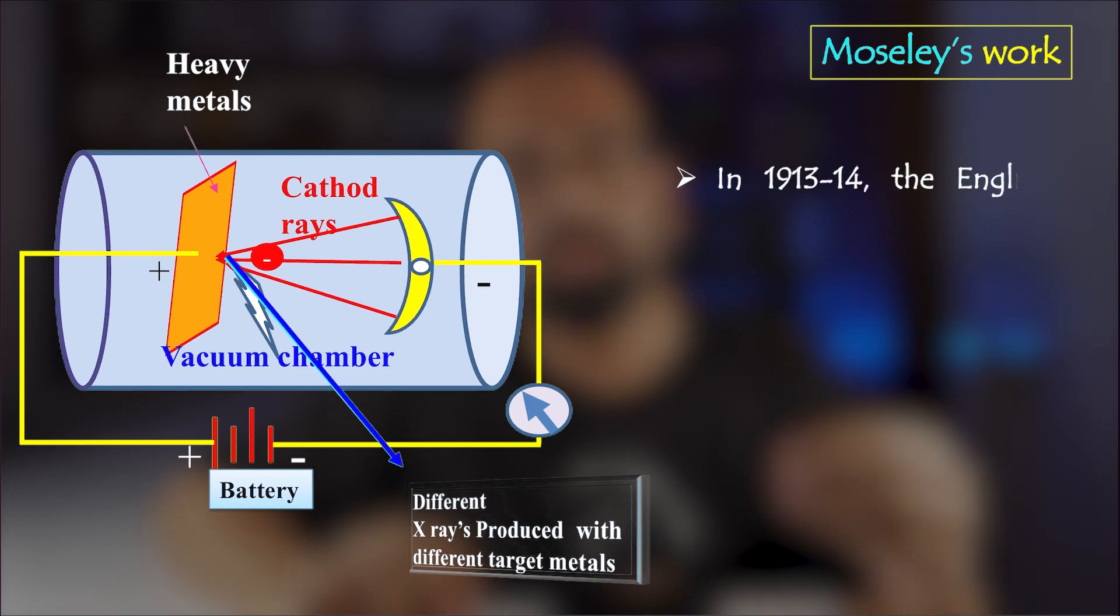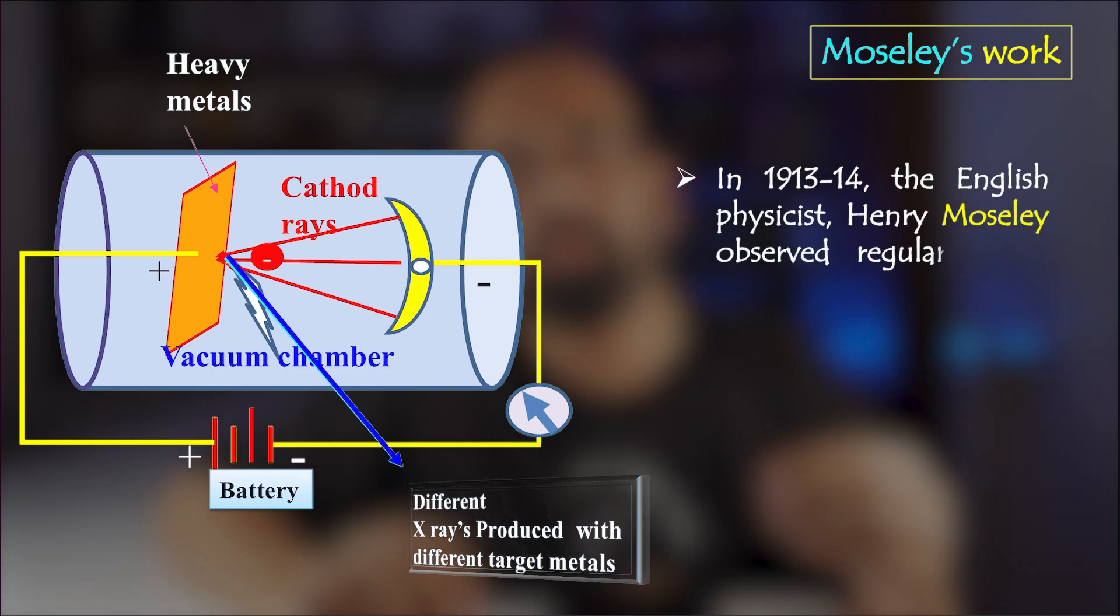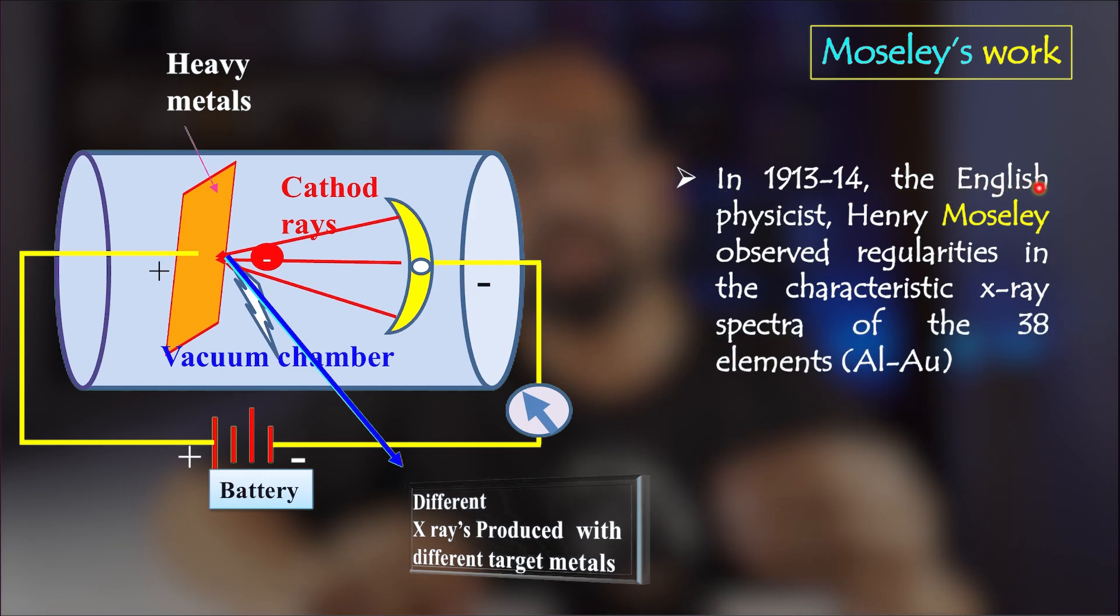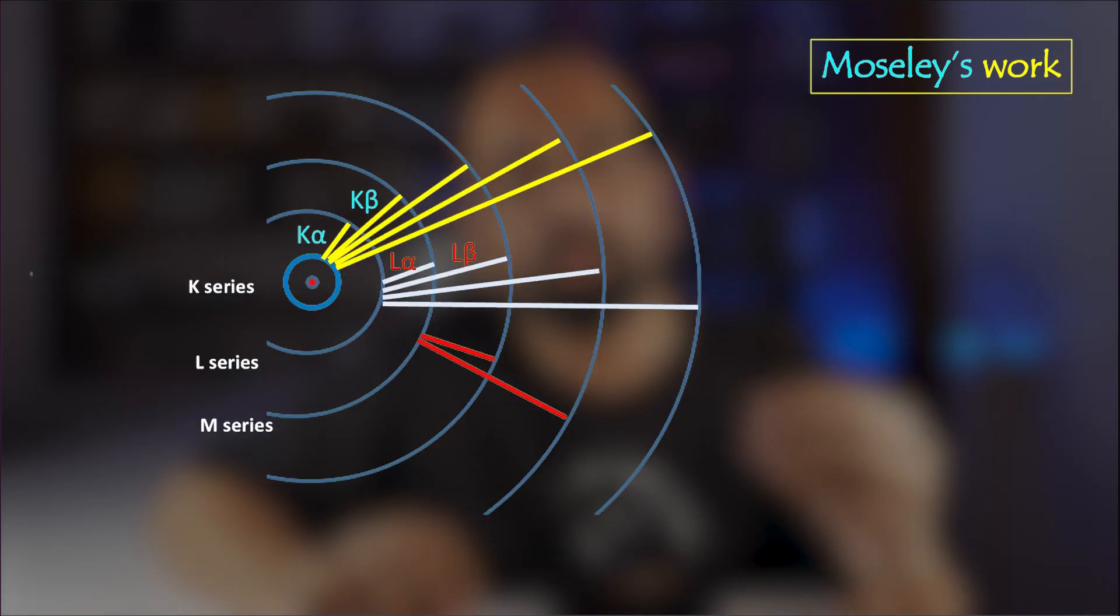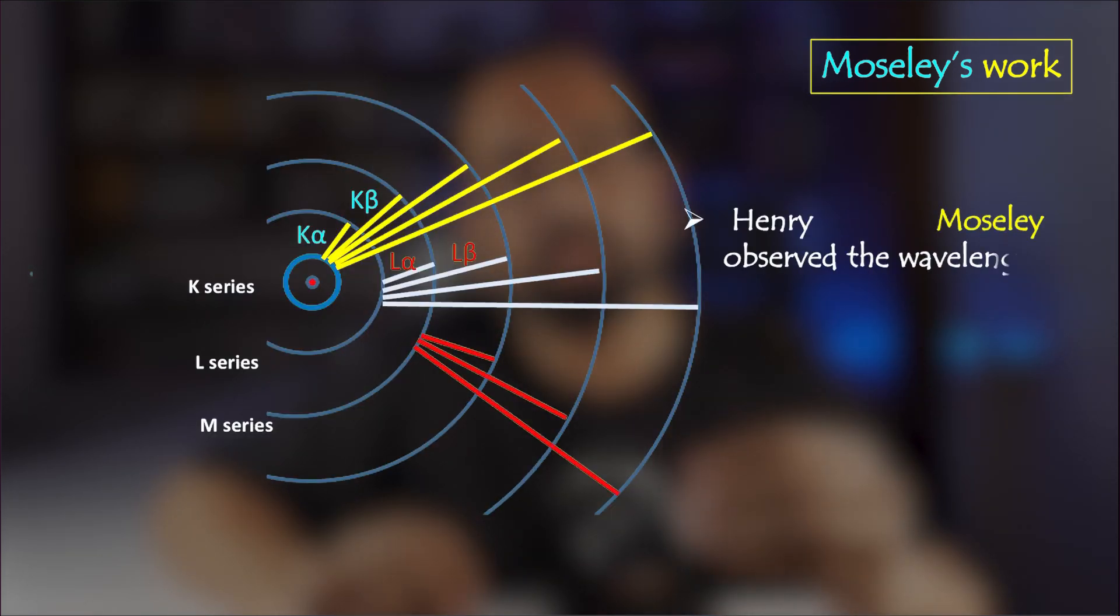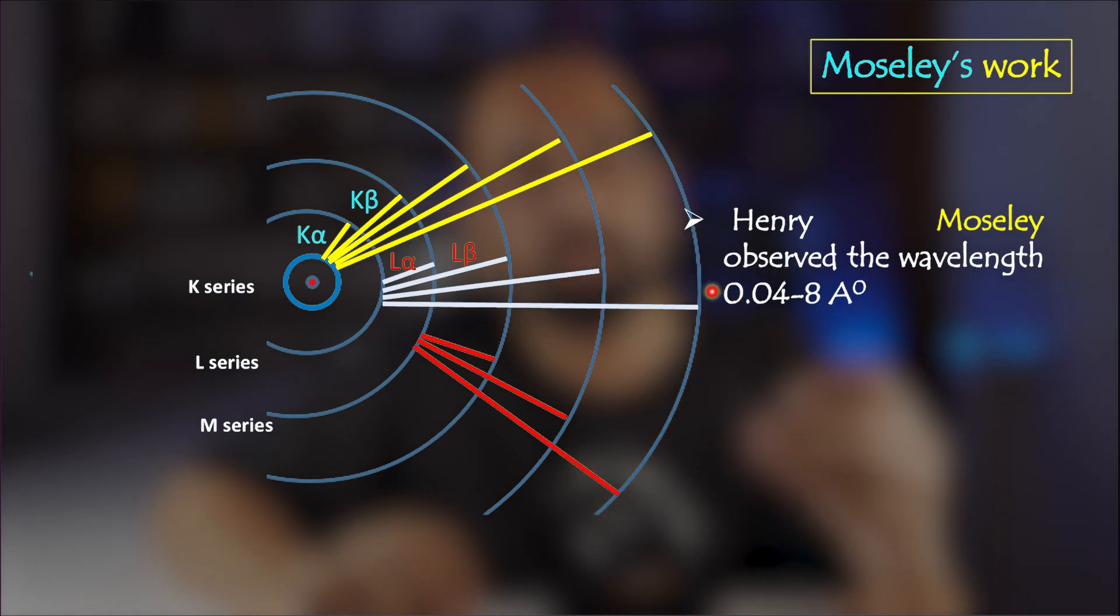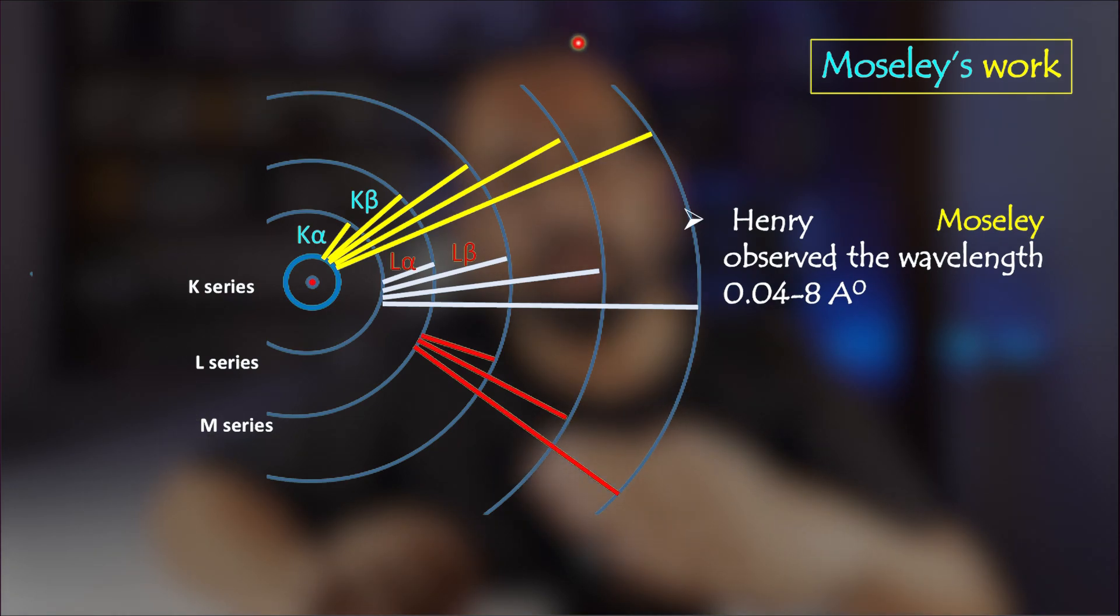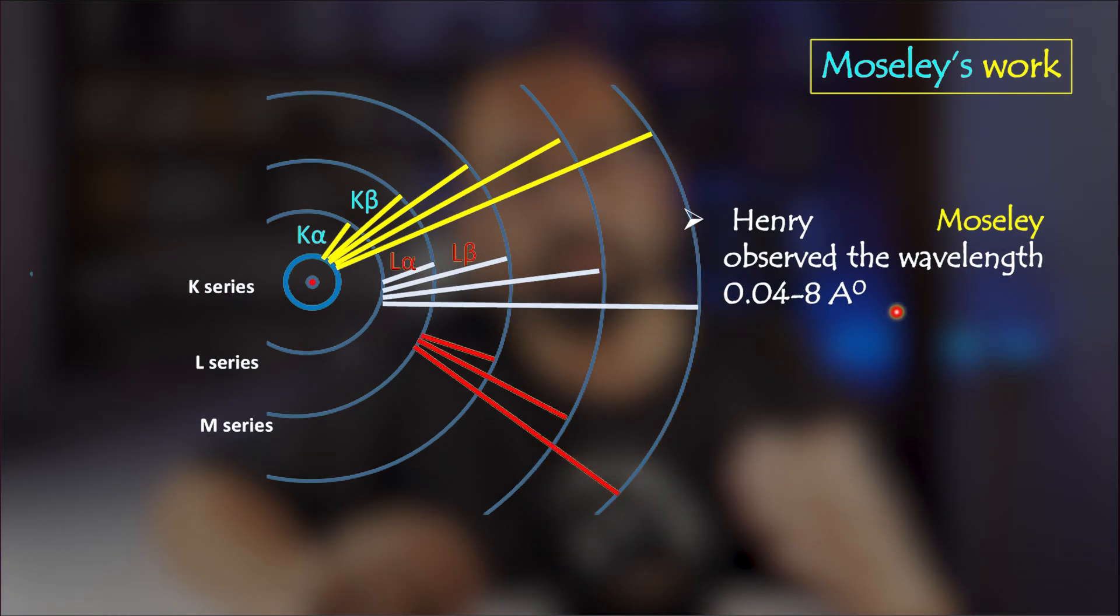Now let's move on to the experiment itself. Moseley studied X-rays most comprehensively and used 38 different elements as the target materials in the X-ray tube from aluminum to gold. And he observed the X-rays having the wavelength range of 0.04 to 8 angstrom.